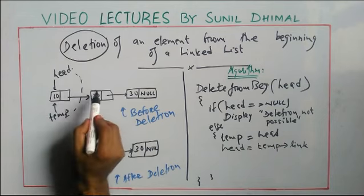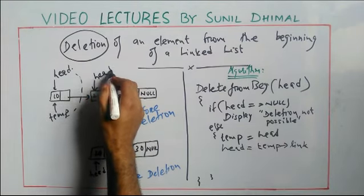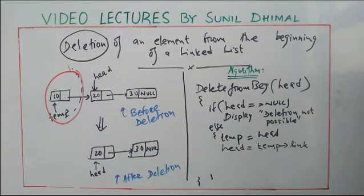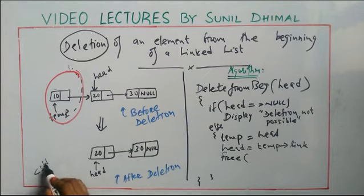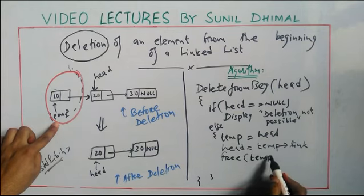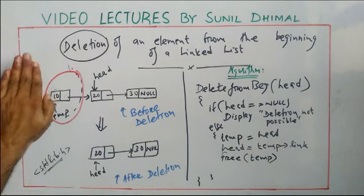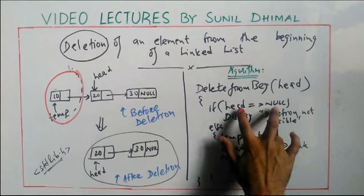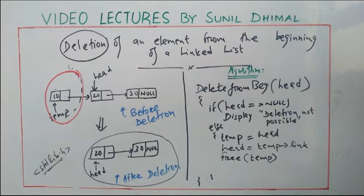Head now points to link of temp, advancing to the second node. I no longer need the first node, so I delete it using the free() function available in C from stdlib.h. By calling free(temp), the memory pointed to by temp is freed and that node is deleted, leaving you with the correct result. Do not forget to handle the corner case whenever the list is empty.